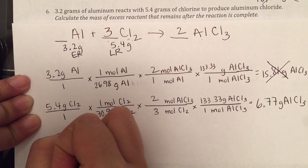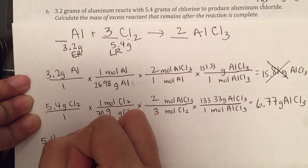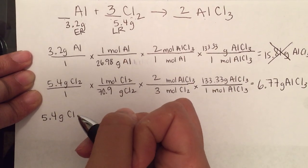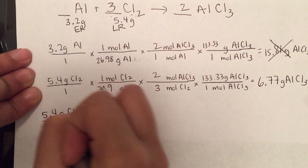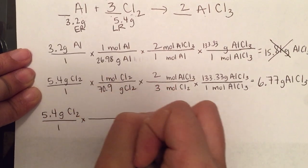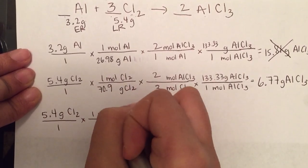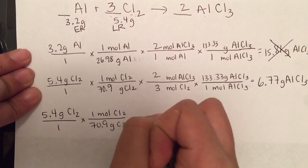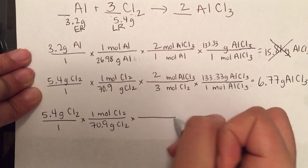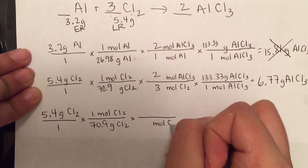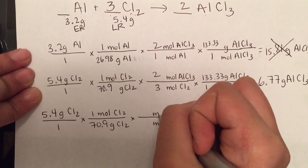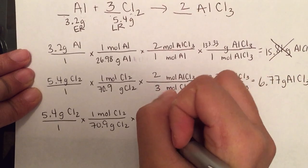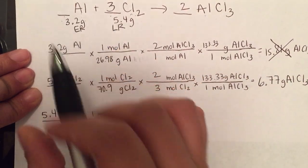So we're going to set this up. 5.4 grams of chlorine, put that over 1. Convert this to moles. Go into my mole ratio. So moles of chlorine to moles of aluminum.